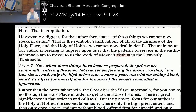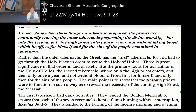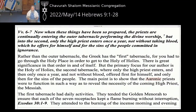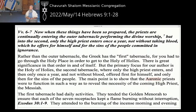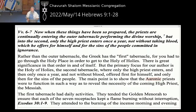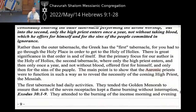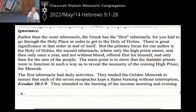Let's go on to verses six and seven. When these things have been so prepared, the priests are continually entering the first tabernacle, performing the divine worship. The primary focus for our author is the holy of holies — the second tabernacle — where the high priest enters only once a year, not without blood. The main point is to show that the Aaronic priests were to function in such a way as to reveal the necessity of a coming high priest, the Messiah.